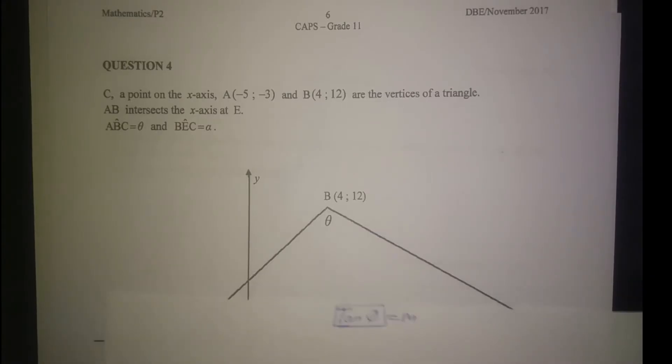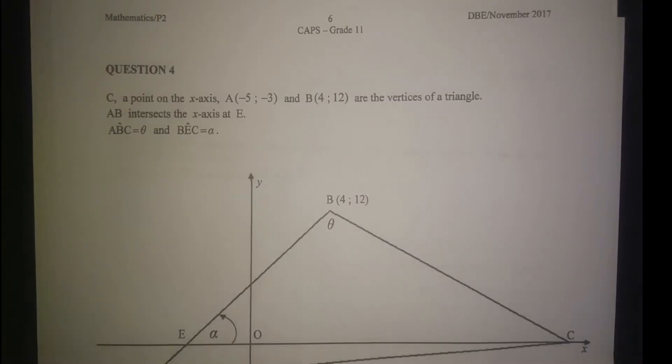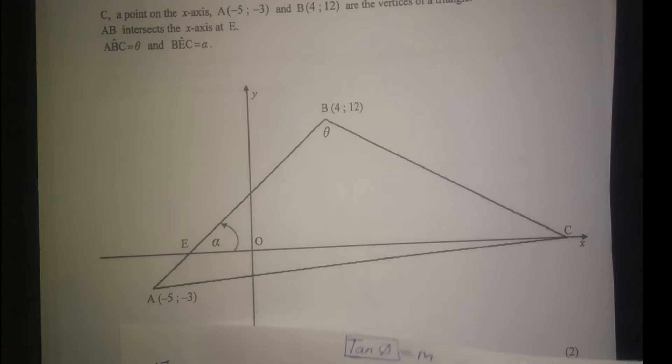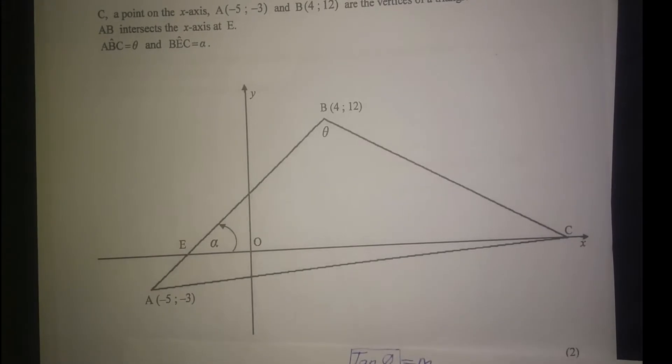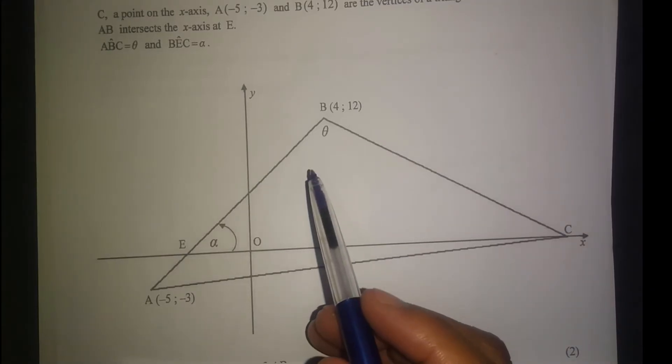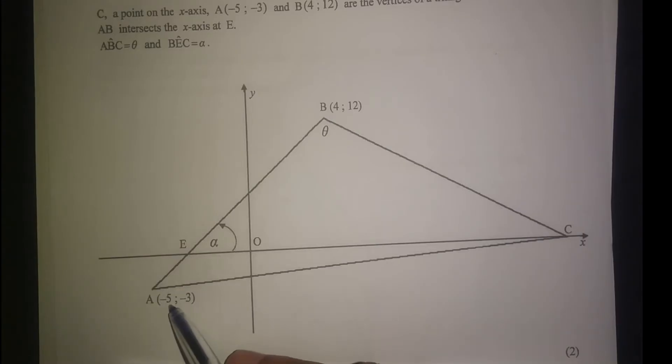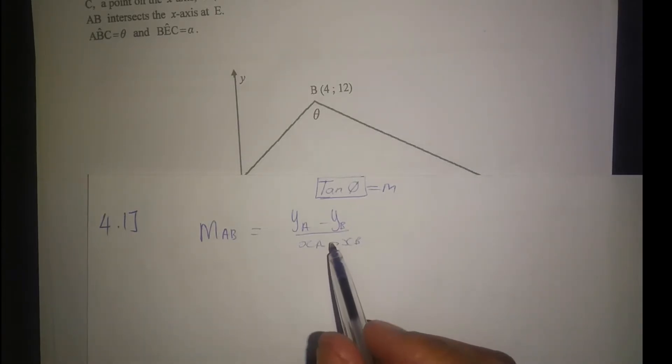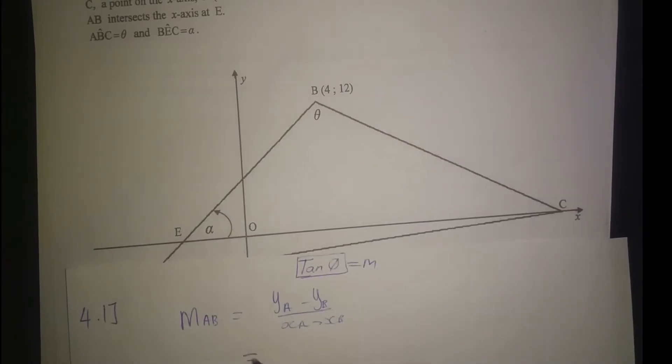4.1: Calculate the gradient of AB. Gradient AB we can calculate using the normal formula I used in the previous question, Question 3. Question 3 was the first question where we calculated gradient, but they only gave us one coordinate. So we had to use a different approach for answering that question. But for this case, we have two coordinates.